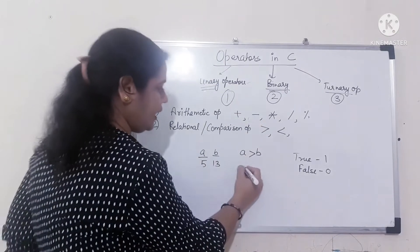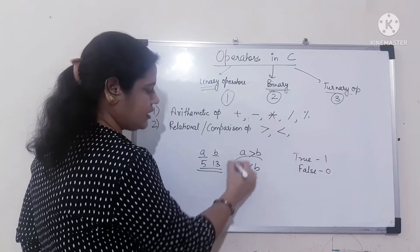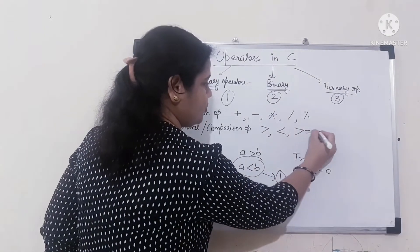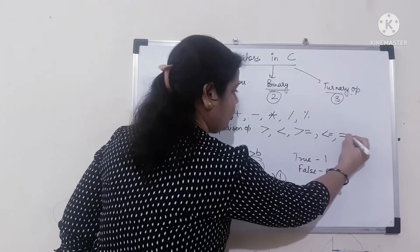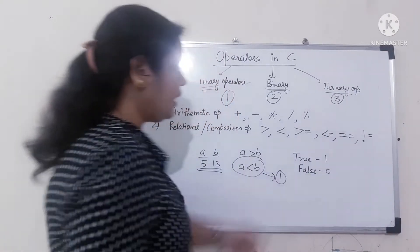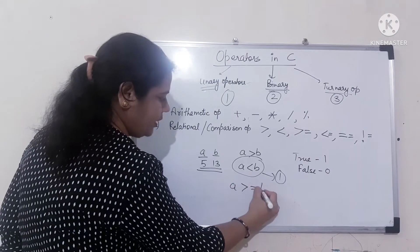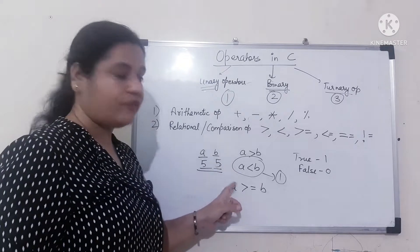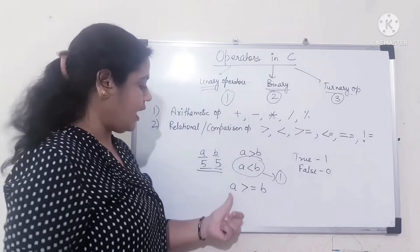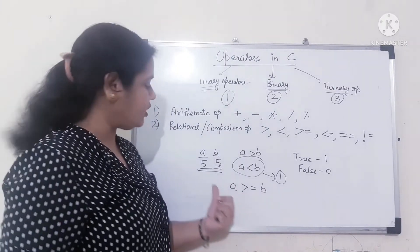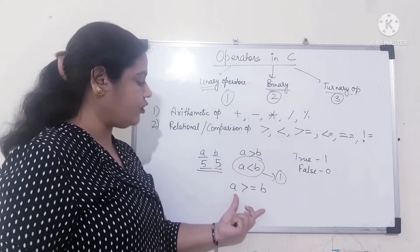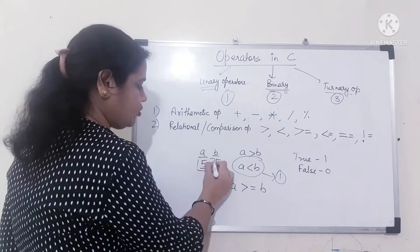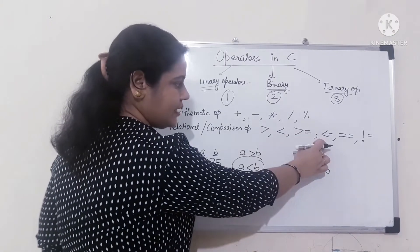Less than: if A is less than B, it will return true. Then greater than or equal to, and less than or equal to. If A is greater than or equal to B — say 5 and 5 — it will return true, because either greater or equal both give true. If A is 15, again true. If A is 25 with B as 5, then false. Same logic applies to less than or equal to.